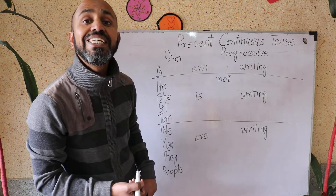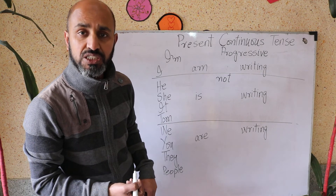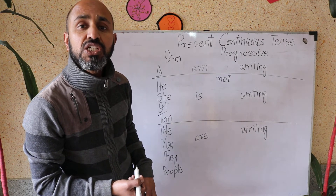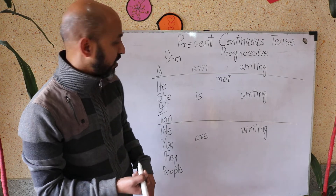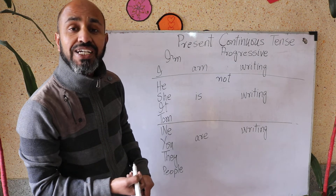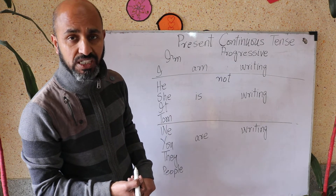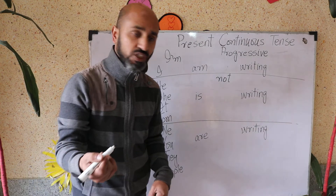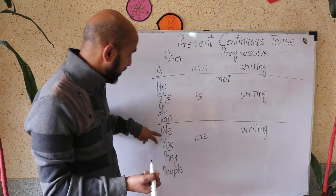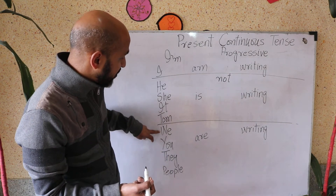For 'is', you can say 'he isn't writing', 'she isn't writing', 'it isn't writing', and 'Tom isn't writing'. Similarly, for the 'are' group we have the negative forms as well.